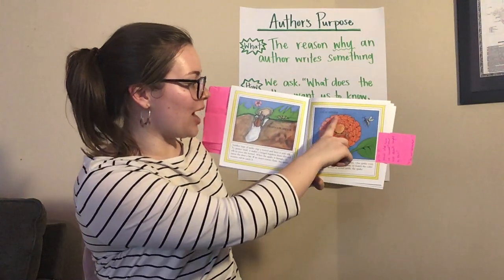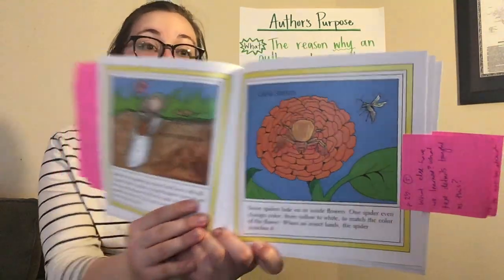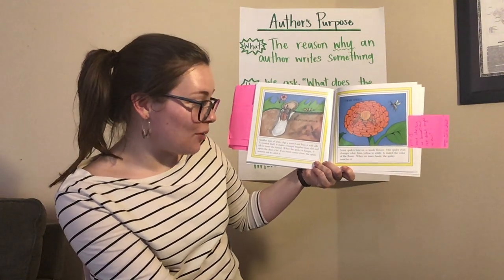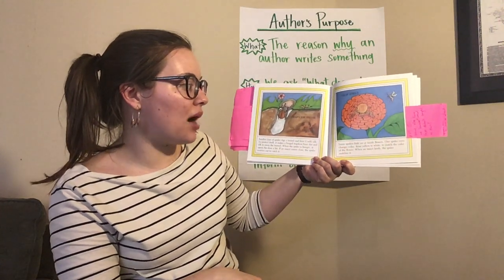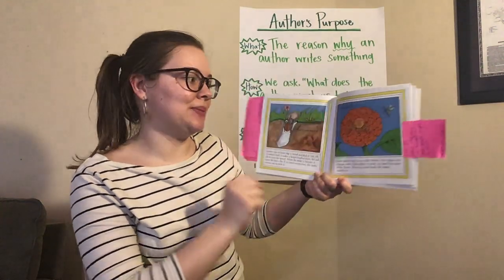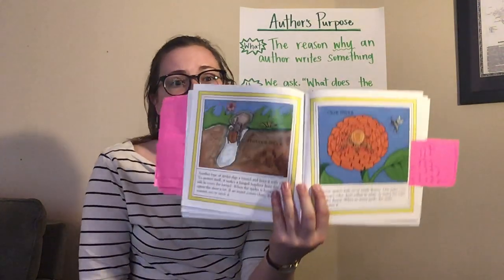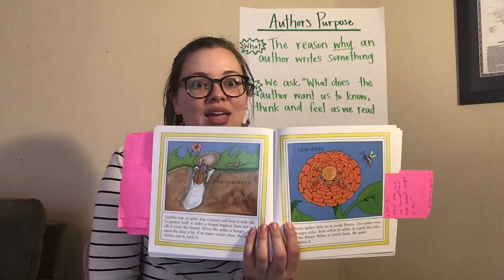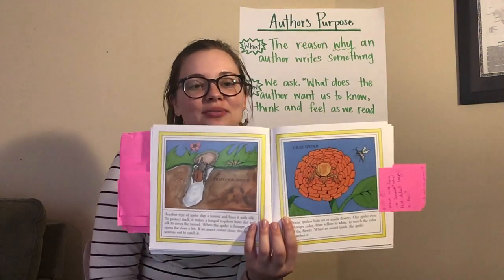Over here we have a picture of a crab spider. Can you tell where the crab spider is? I think it's doing a pretty good job of camouflaging. Some spiders hide on or inside flowers; the spider even changes color from yellow to white to match the color of the flower, and when an insect lands the spider snatches it. What's one new thing that you have learned? Go ahead and pause and talk to someone around you.